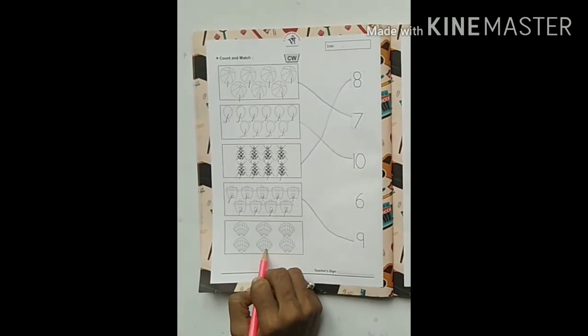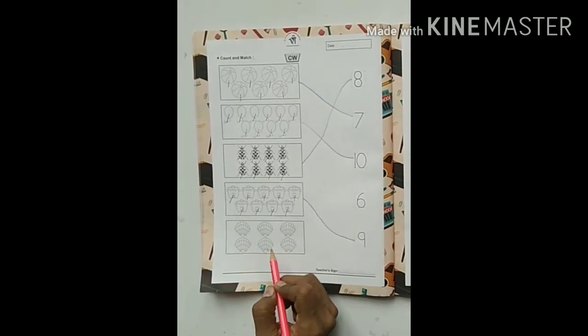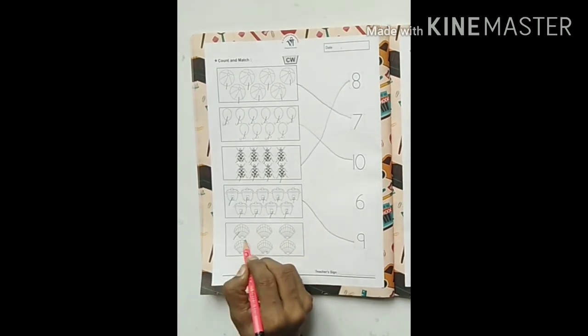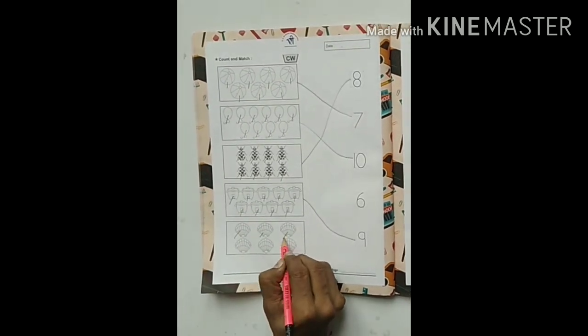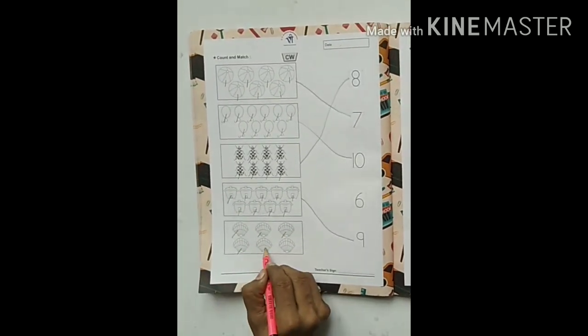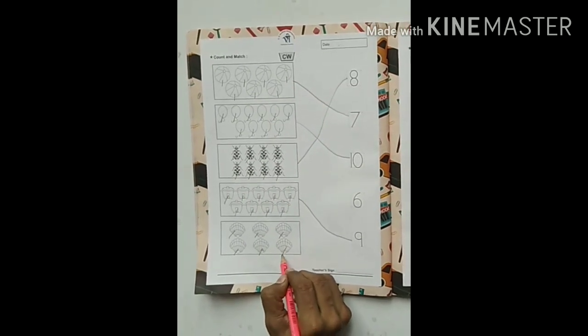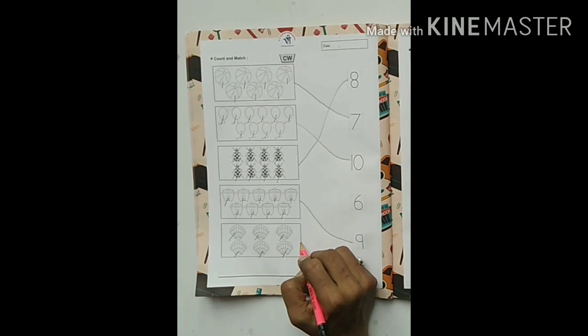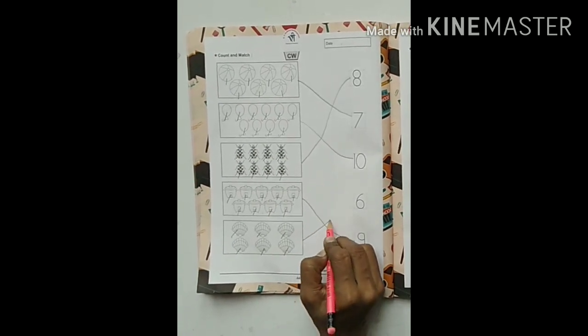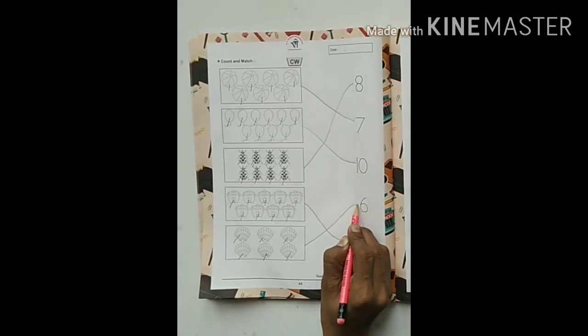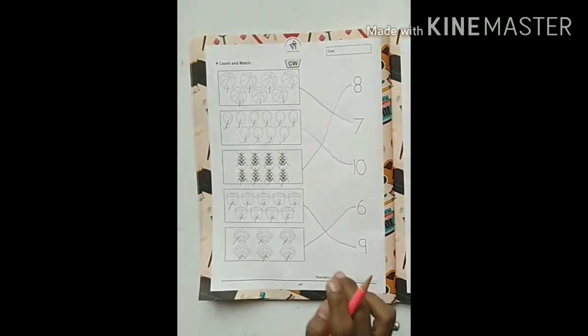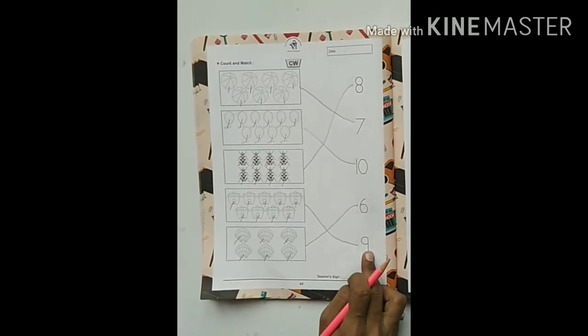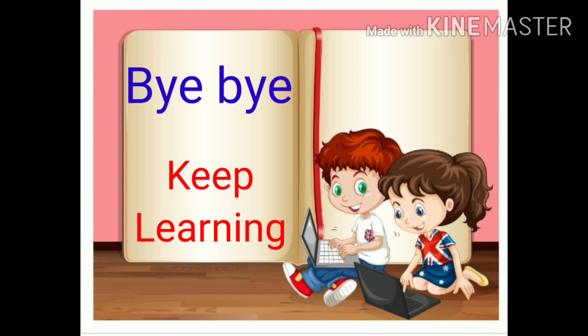Our next picture is shells. Let's count. 1, 2, 3, 4, 5, 6. Now we have to match 6 shells with the 6 number. Yes. Like this you have to count and then match. Bye-bye kids, keep learning.